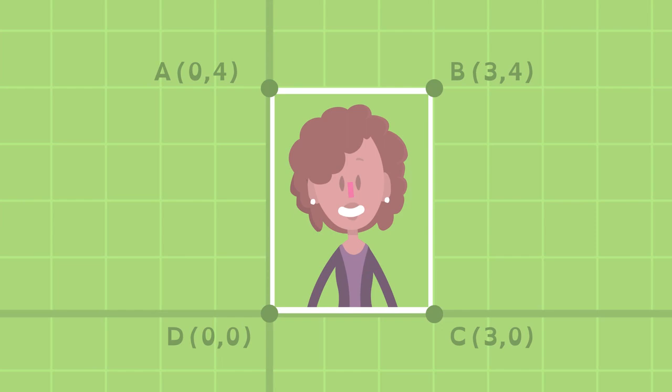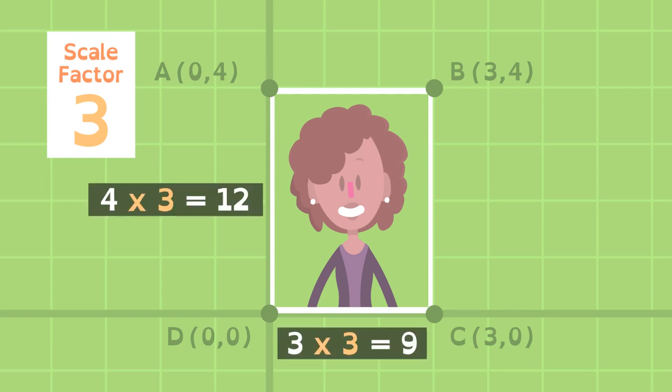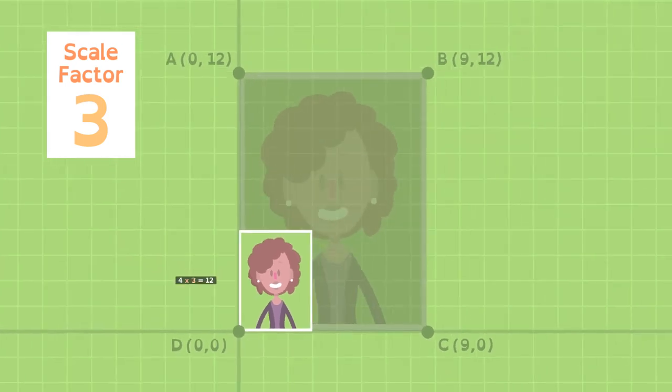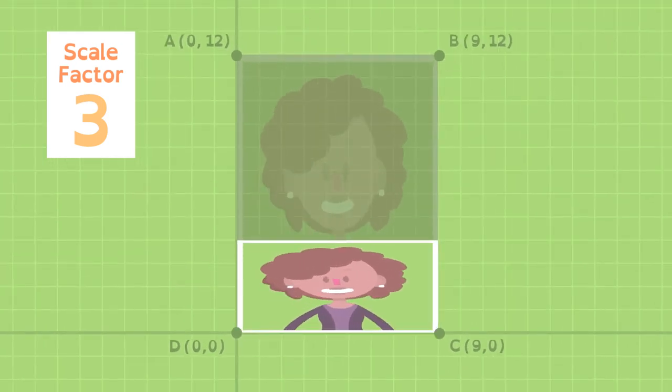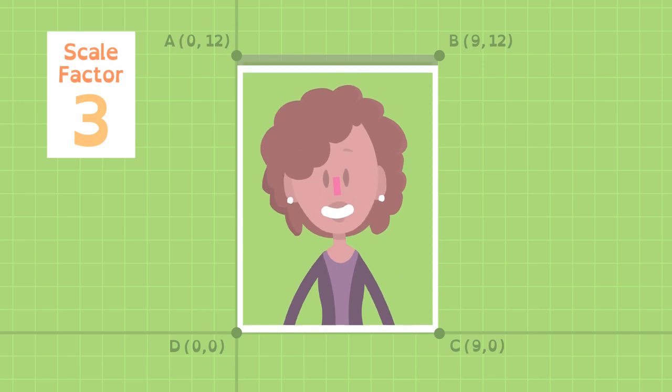A coordinate grid can help us see how this works. If the center of dilation is (0, 0) and the scale factor is 3, the horizontal distance from the center of dilation is 3, and the vertical distance is 4. Multiplied by a scale factor of 3, the horizontal difference becomes 9, and the vertical distance becomes 12, stretching the shape 9 units to the right of the center of dilation and 12 units up.